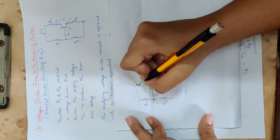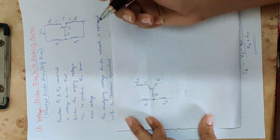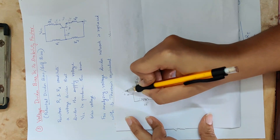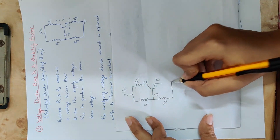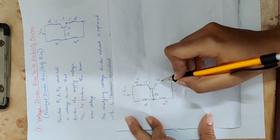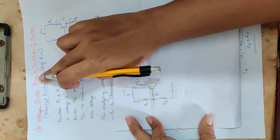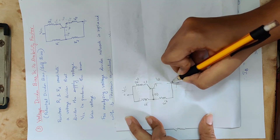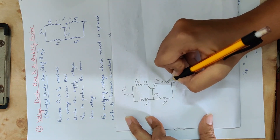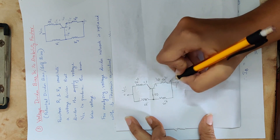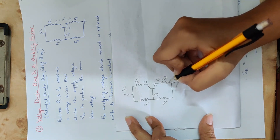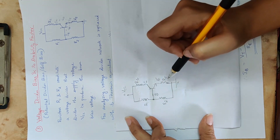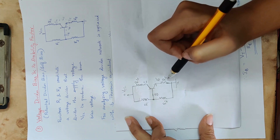This is the voltage divider bias circuit. We will learn the bias by resistance and perform the voltage divider circuit. We will provide RE, the emitter resistance. This is very important.